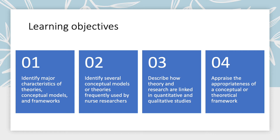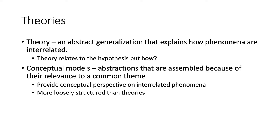The chapter has four learning objectives. One, to identify major characteristics and theories, conceptual models and frameworks. Two, to identify several conceptual models or theories frequently used by nurse researchers. Three, to describe how theory and research are linked in quantitative and qualitative studies. And four, to appraise the appropriateness of a conceptual or theoretical framework.